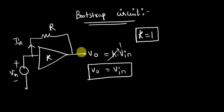Now the potential across this terminal is VIN, and the potential across this terminal is also VIN. Now if you look here, there is no potential difference across these two points.